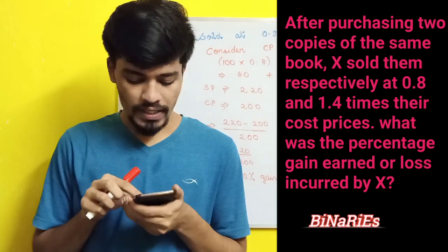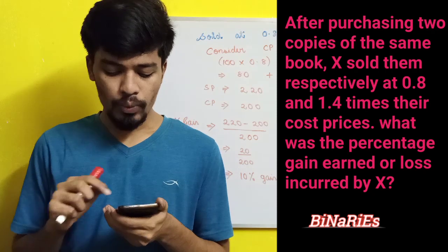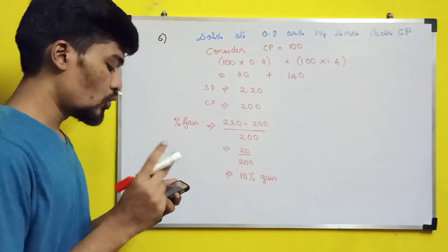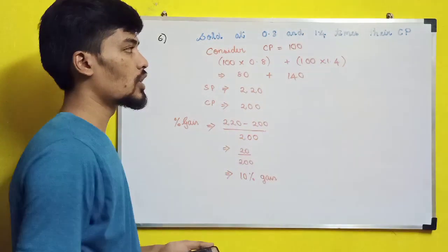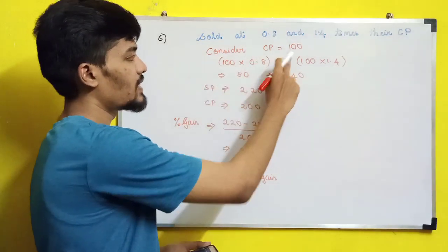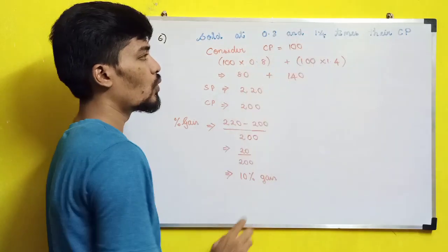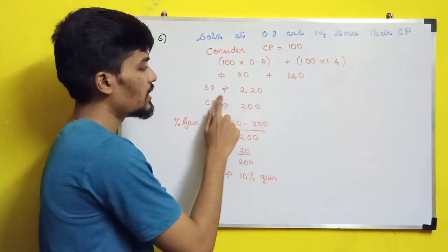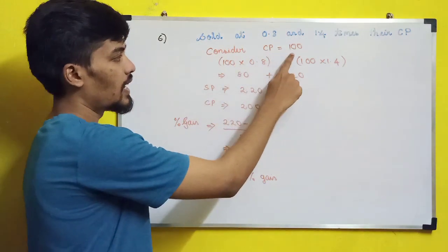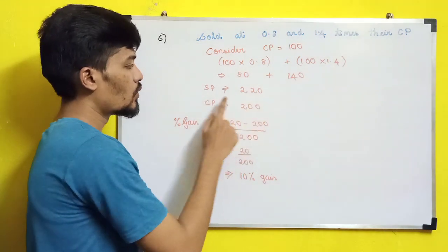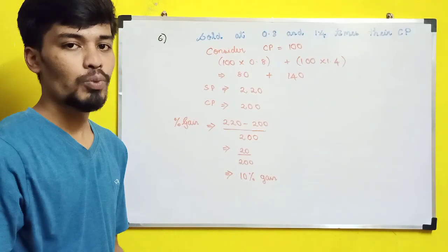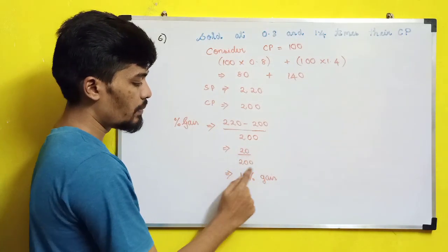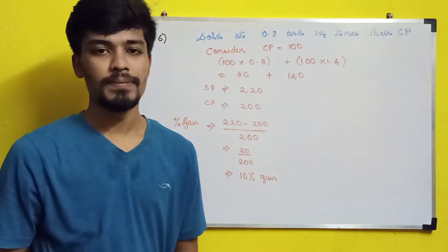The next question: after purchasing two copies of the same book, x sold them at 0.8 and 1.4 times their cost price. What was the percentage gain or loss? Assume cost price = 100 per copy. Selling prices: 100 × 0.8 = 80 and 100 × 1.4 = 140, so total selling price = 220. Total cost price for two copies = 200. Since selling price > cost price, profit percentage = (220 − 200) / 200 × 100 = 10% gain.